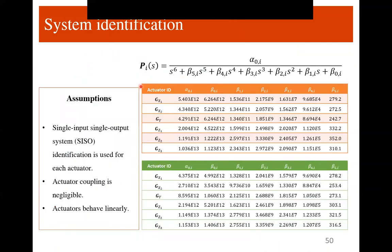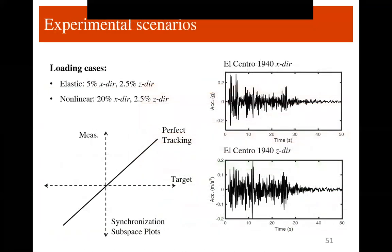System identification results for two LBCBs, each with six actuators, were obtained. Assuming actuator coupling is negligible and actuators behave linearly, transfer function models were fit. I then performed two experimental scenarios: the elastic case and the nonlinear case.